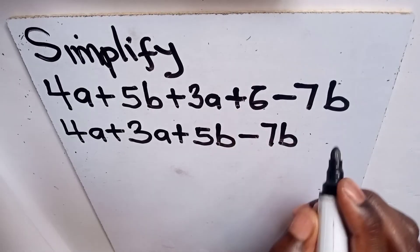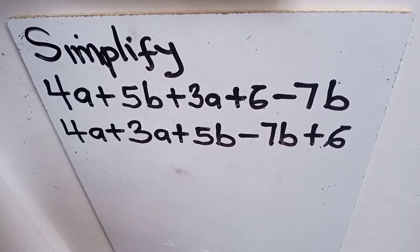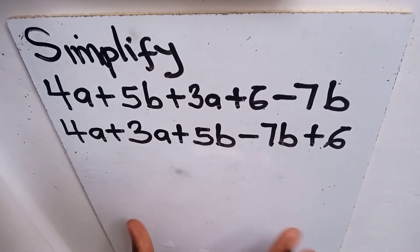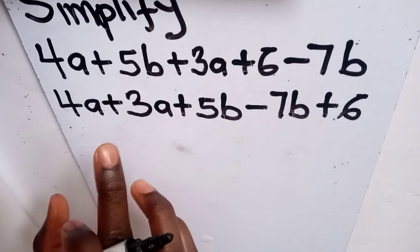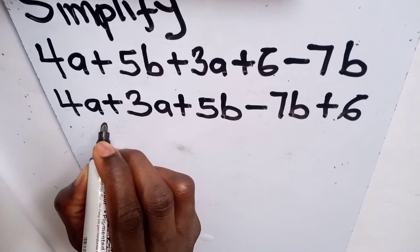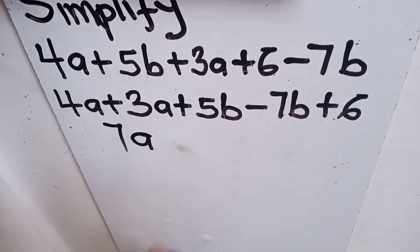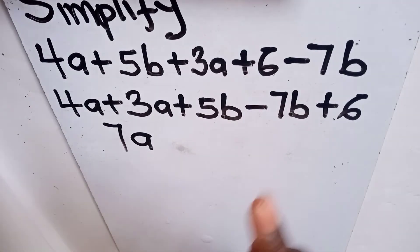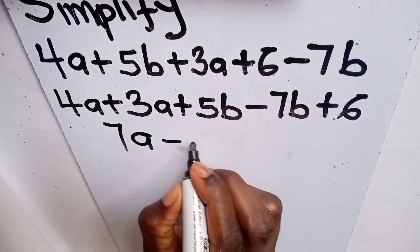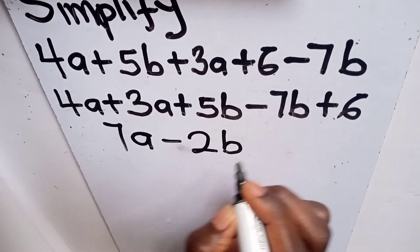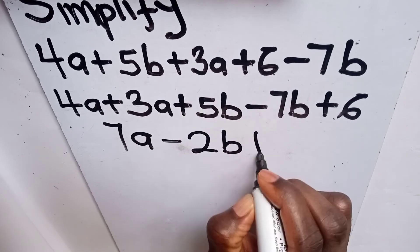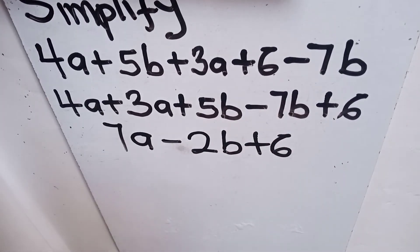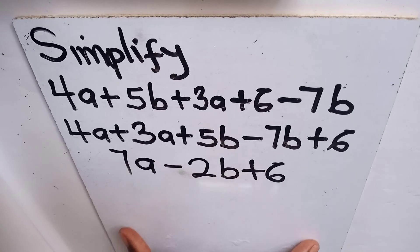We also have our constant number, which is positive 6. Now that we have grouped the like terms, we can add those that are like terms. 4a plus 3a gives you 7a. Now we have 5b and we are taking off 7b from the 5b, so that leaves us negative 2b. And we have only one constant number here, which is positive 6.